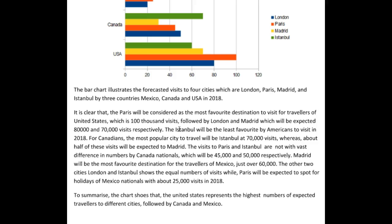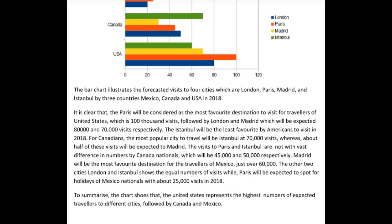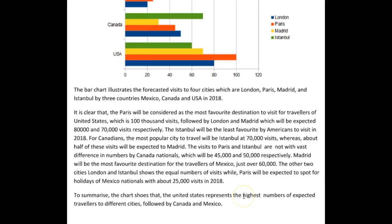In future Task 1s, try to comment on everything the USA is doing, everything Canada is doing, everything Mexico is doing — maybe one paragraph for the individual countries, one paragraph for the individual cities, one paragraph for the overall major trends and groups we can see, and then a conclusion and an introduction.